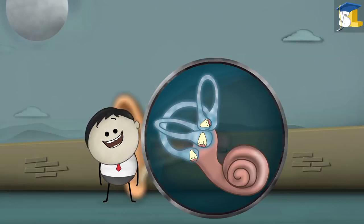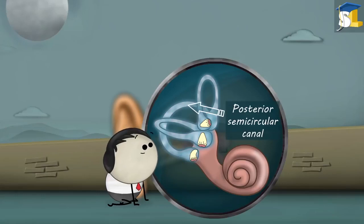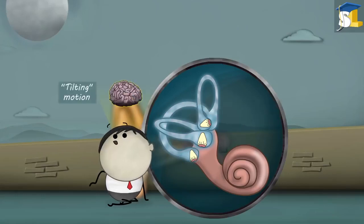When we tilt our head towards our shoulders, the posterior semicircular canal helps our brain to understand the tilting motion.